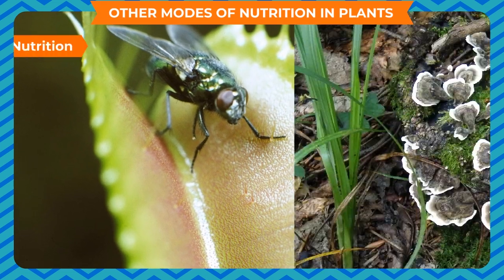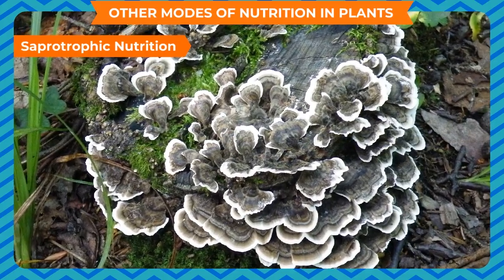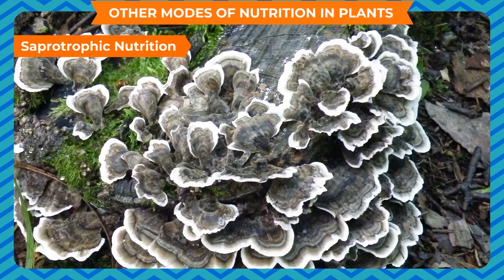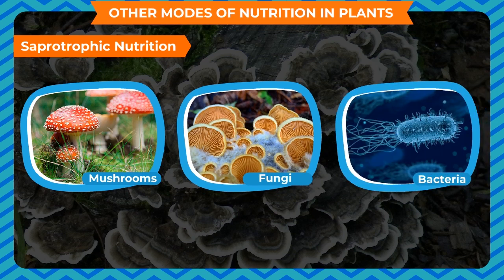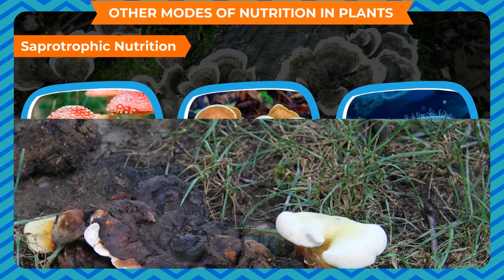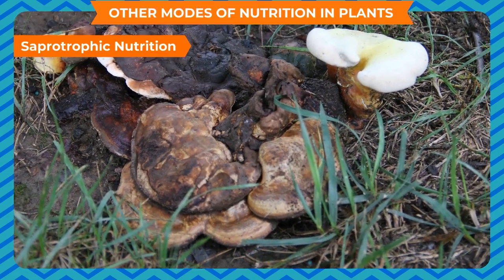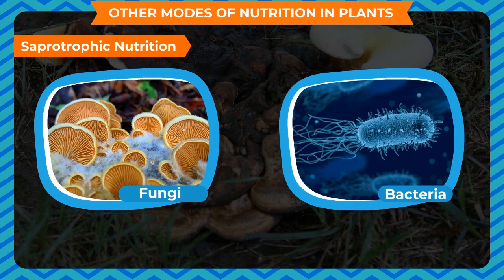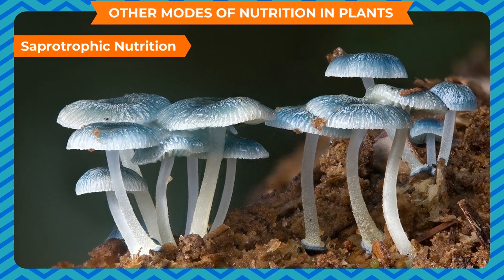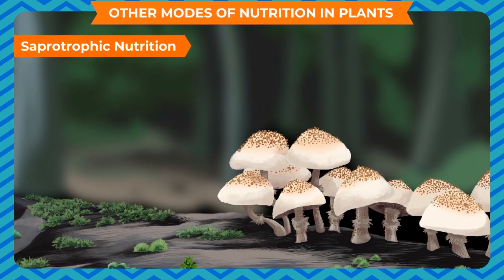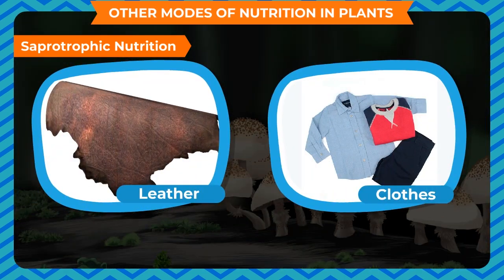Saprotrophic nutrition: some non-green plants live on dead and decaying plants and animals and derive their food from them. Examples include mushrooms, other fungi, and bacteria. They secrete digestive juices on dead and decaying matter, which converts it into a solution that is absorbed by the fungi and bacteria. This method of getting nutrients from dead and decaying matter in liquid form is known as saprotrophic nutrition. Plants using this mode are called saprotrophs. Fungi also grow on pickles, leather, clothes, and other articles left in hot and humid conditions.